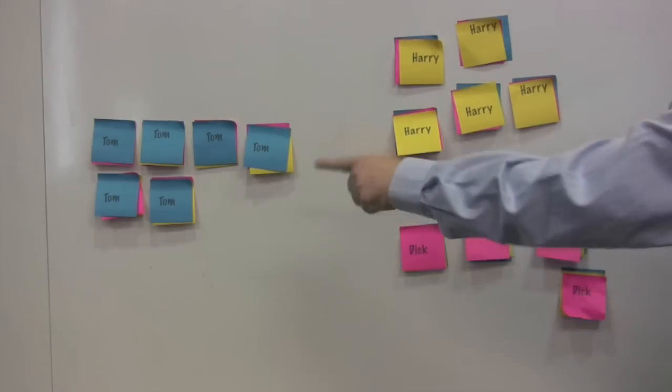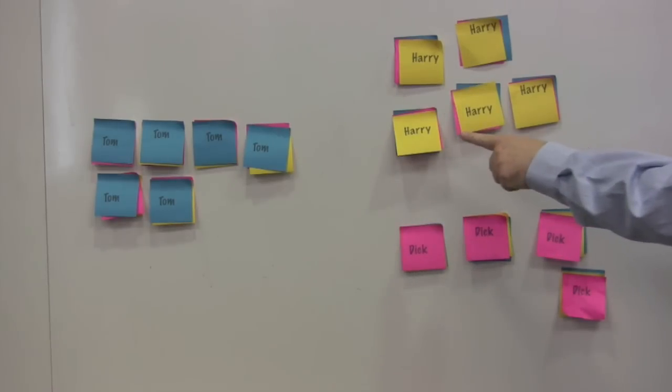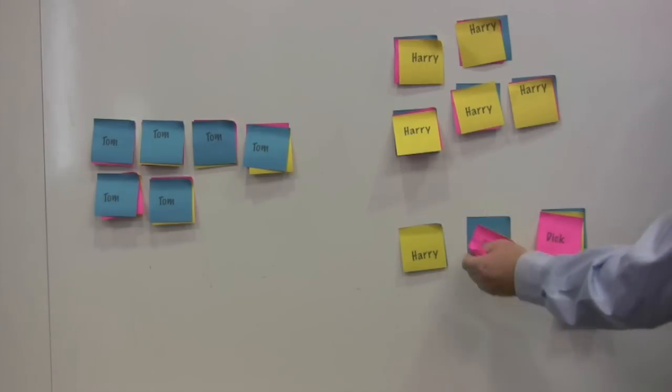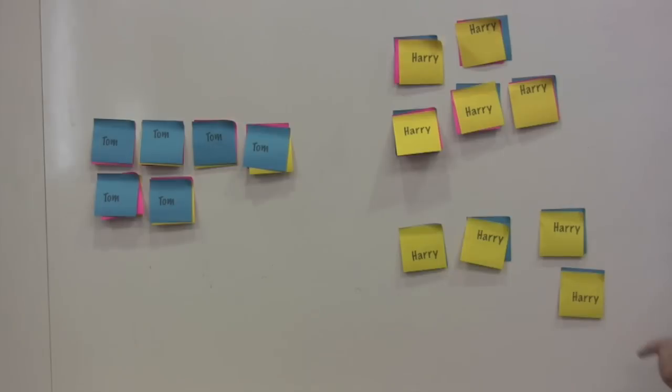So here you have it. Tom has six votes, Harry has five votes, and Dick has four. In this particular case, no one has the majority. So you go to the candidate that has the lowest number of votes and you take their second choice. In this case, it's Harry. Harry now has nine votes. He has the majority. He is the winner.